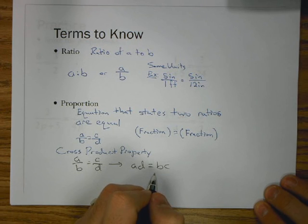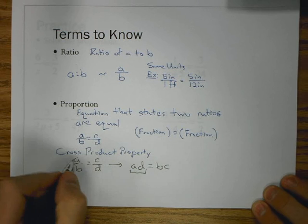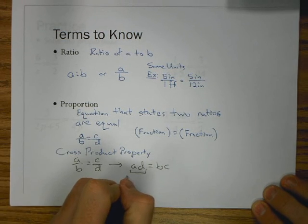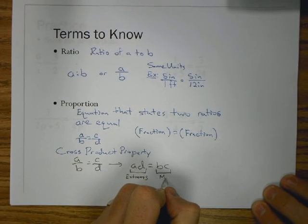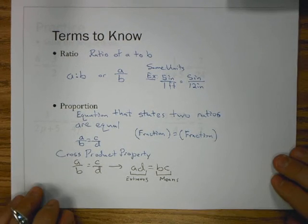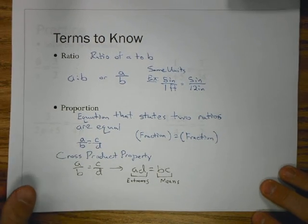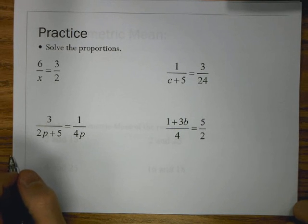You also have another term in this section, which were the extremes and means. We're going to see how means is used a little bit later in this section. But for identifying the extremes in a proportion will be A and D. And the means will be B and C. Geometric mean will be a term in itself, but it's good to know where they come from.